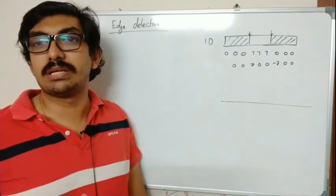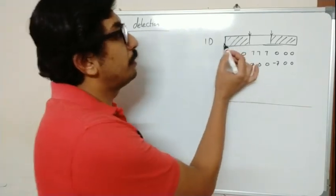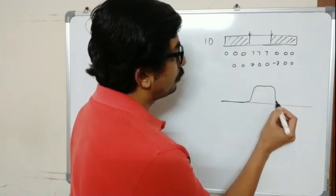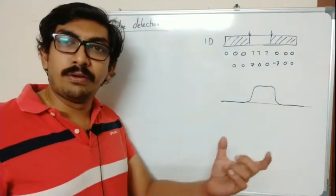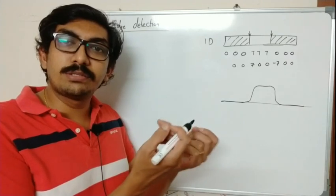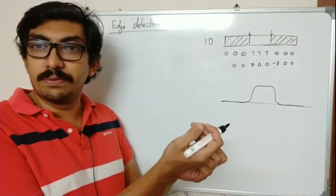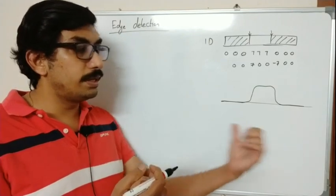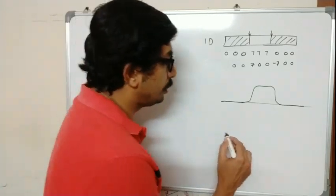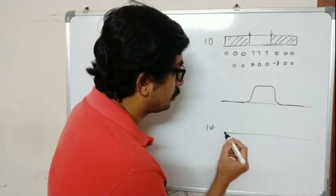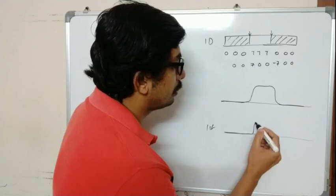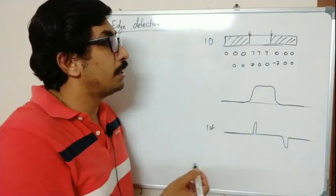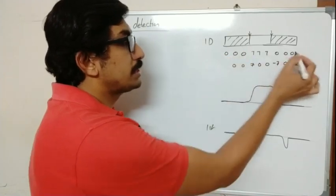What is the definition of a first derivative? In a continuous function, if we mark these values as a function — zeros followed by sevens followed by zeros — the first derivative is actually calculating the change in the function value. It checks the change with each position. Where there is no change it will be zero, and at transitions there will be a peak. This would be the first derivative of this function. For discrete values we find the derivative by subtracting.